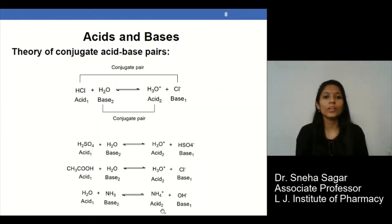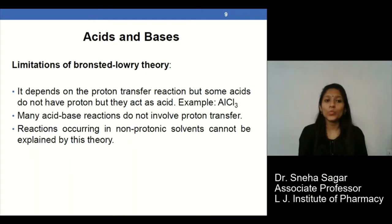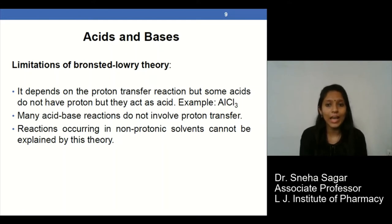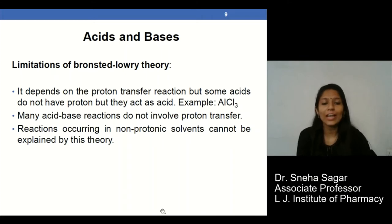The theory of conjugate acids and bases can be explained by the Bronsted-Lowry concept. One limitation of the Bronsted-Lowry concept is that it cannot define certain characteristics of AlCl₃ and some other acids and bases, because it only depends on proton transfer reactions. Some acids or bases do not participate in proton transfer reactions, which is the limitation of this theory.